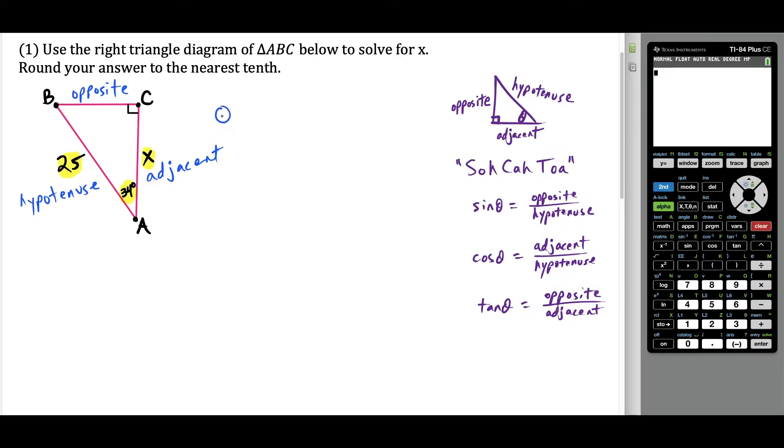But now this is what's bouncing around in my head here. I think about what were we given, we were given that we have a 34 degree angle, we want to know what x is, and we know the side length 25. And think about what we were told, we were told the hypotenuse. And we were also told to find the adjacent side. So with all these terms bouncing around in my head, I think, all right, adjacent hypotenuse, which formula uses adjacent and hypotenuse, it's going to be cosine.